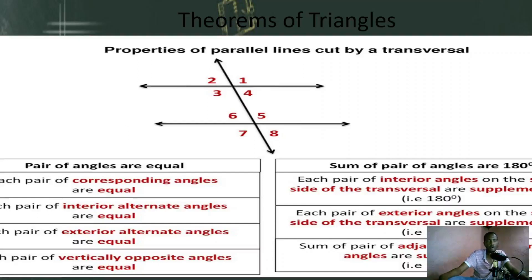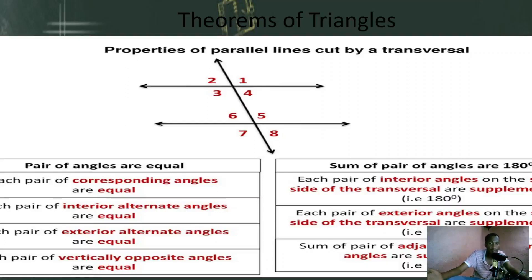An equilateral triangle means all sides must be equal and all angles must be equal. That's an equilateral triangle. And the second one — isosceles: two sides and two angles must be equal; one angle may be different. An equilateral triangle can also be isosceles.